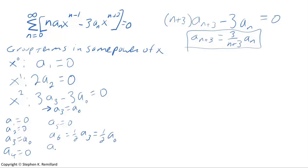a_7 must be 0, a_8 must be 0. Let's just do one more, a_9. And follow the box. It's not going to be 0 because a_6 is not 0. But it's 3/(6+3), or 3/9, a_6. And since a_6 is (1/2)a_0, that's (1/6)a_0.